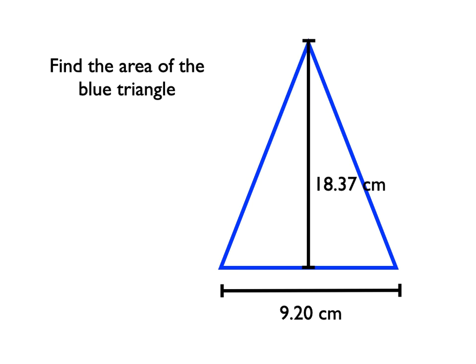First think about what is the equation for area of a triangle. Then go ahead and do the calculation, round your answer off to the correct number of significant digits. Make sure you think about the units. Pause the video, give it a shot, and then we'll go through the problem together.